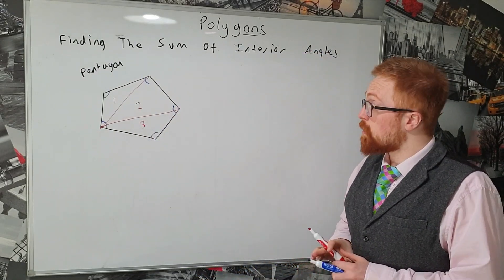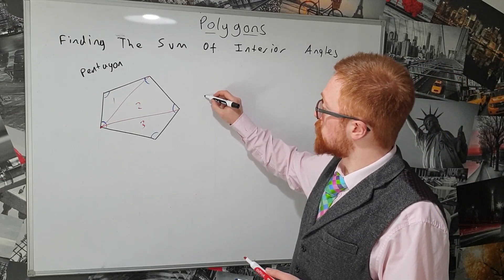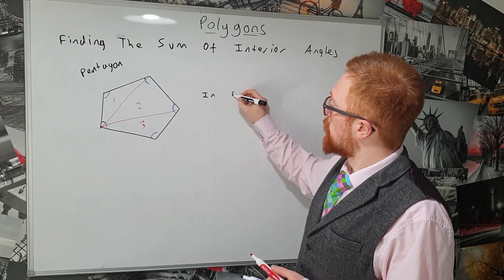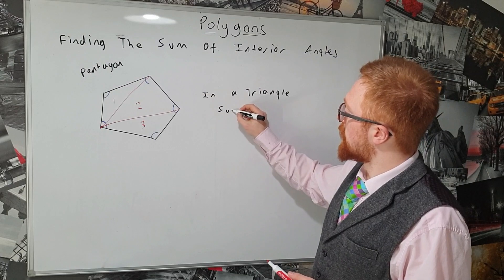Okay now we need to use the fact that angles in a triangle add up to 180 degrees. So in a triangle the sum is 180.